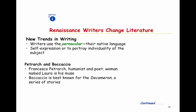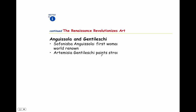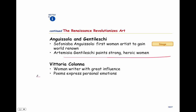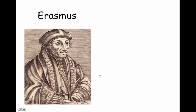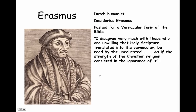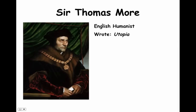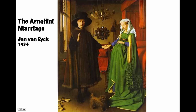New trends in writing included the vernacular — Petrarch, Boccaccio. There are also examples of women Renaissance artists and another female poet. Erasmus was trying to get the Bible translated into the vernacular. We've already talked about Sir Thomas More. I love this painting.